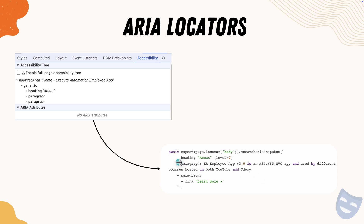You can see it tells you exactly what the locator is going to be, and the team has removed HTML tags entirely. If it is a heading, it is specified exactly as it appears in the accessibility tree. For example, if the accessibility tree says 'heading about' at level two, toMatchAriaSnapshot says 'heading about' with level equal to two. It also tells you there are two paragraphs with their text content, and if there is a link inside a paragraph it says 'link' and then the link text like 'learn more'.